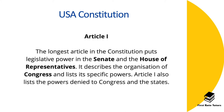Article 1 is the longest article in the constitution and it places legislative power in the Senate and the House of Representatives. This article also describes the organization of Congress and lists its specific powers. It also lists the powers denied to Congress as well as the states.